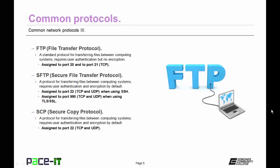Surprisingly, SFTP, which stands for Secure File Transfer Protocol, is more secure than FTP. It is a protocol for transferring files between computing systems. It does require user authentication and encryption by default. It's assigned to port 22 using TCP and UDP when SSH is used for encryption. By default, it's assigned to port 990 when using TLS or SSL for encryption, and it still uses TCP and UDP as its transport layer protocol.